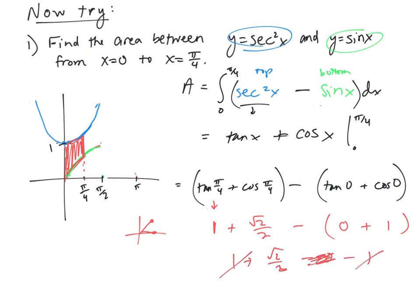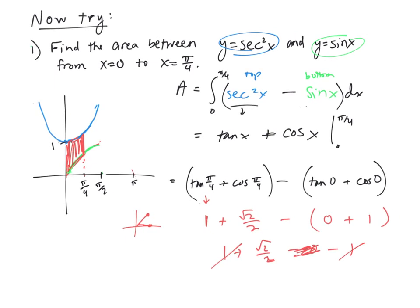Almost there. Let's distribute: 1 + √2/2 - 0 - 1. The ones cancel out, so the final answer is √2/2. That represents the area I shaded in red on the graph. Hopefully that helped. If you're feeling confident, try problems 2, 3, and 4. I'll put separate videos together for those.